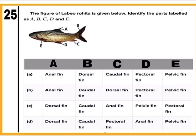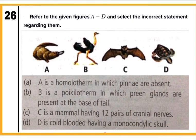Question 25: The figure of Labeo rohita is given below. Identify the parts labeled A, B, C, D, and E. Labeo rohita is a bony fish. In the figure, A is dorsal fin, B is caudal fin, C is anal fin, D is pelvic fin, and E is pectoral fin. Correct answer is option C. Mark C.